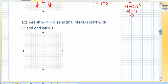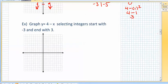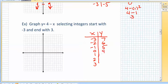So go ahead and try the next one on your own. You can pause it. Four minus x, the same thing. We'll start with negative three and end with three. So four minus negative three is seven. Four minus negative two is six. Four minus negative one is five. Four minus zero is four. Four minus one, three, two, one.